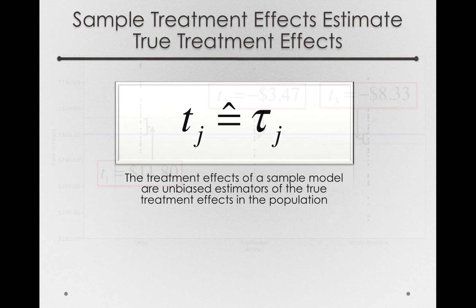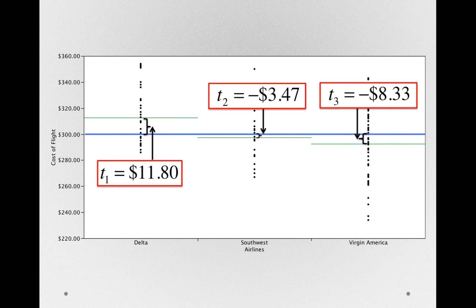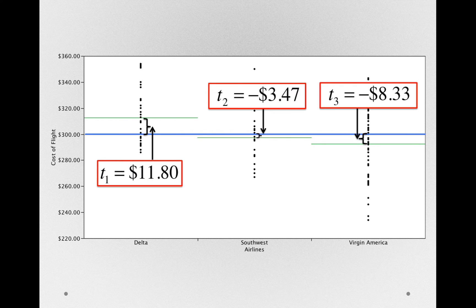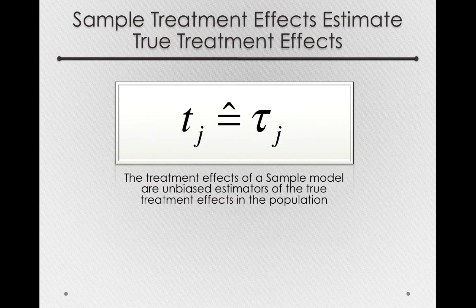So in our sample, even though we got some differences, the T sub 1, 2, and 3's were all different from 0, we're going to be using those differences as a guess of the true tau sub J's.